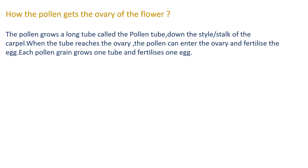How does pollen get to the ovary of the flower? The pollen grows a long tube called the pollen tube. There are small pollen grains inside the anther, which is the part of the stamen. With the help of bees, it goes to the stigma, the female reproductive part. After that it goes down the tube that is the style, and from the style it goes to the ovary which contains the egg. The pollen grows down that long tube — called the pollen tube — down the style of the carpel, which is the female reproductive organ. When the tube reaches the ovary, the pollen can enter and fertilize an egg. Each pollen grain grows one tube and fertilizes one egg.